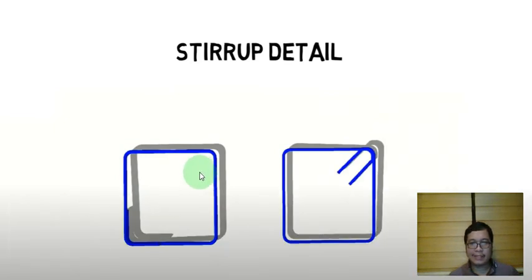So look at this detail, class. What happens when you pour concrete already with your columns? With this kind of design, class, your stirrups won't have any use because it won't be connected. With this one here, you'll have a connection with the concrete. So this system, this detail, is much more beneficial and it's stronger.